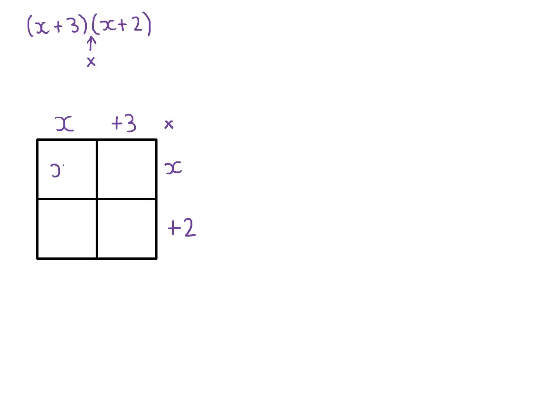So x times x gives us x squared. Positive 3 times x gives us plus 3x. Positive 2 times x gives us plus 2x. And positive 3 times positive 2 gives us positive 6.